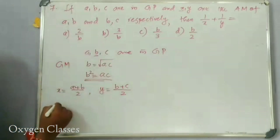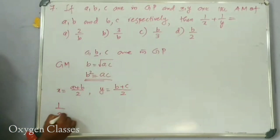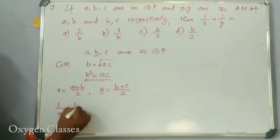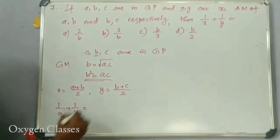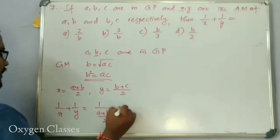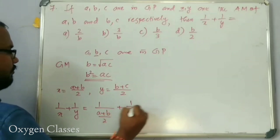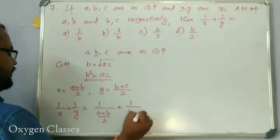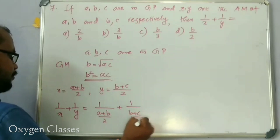1 by X plus 1 by Y equals 1 by (A plus B) by 2, plus 1 by (B plus C) by 2, which gives us 2 by (A plus B) plus 2 by (B plus C).